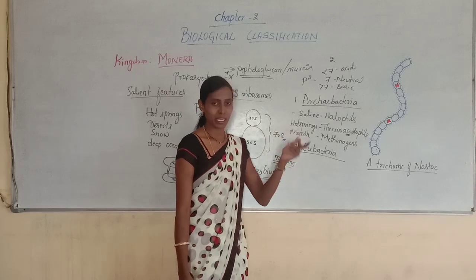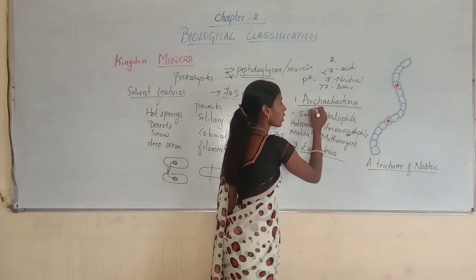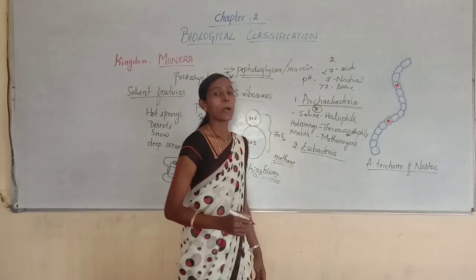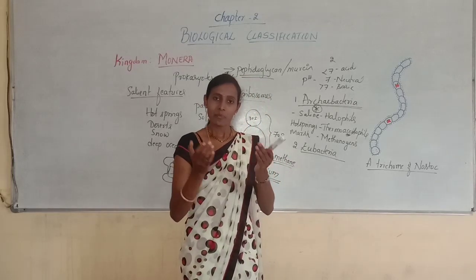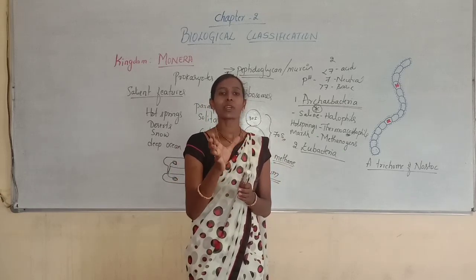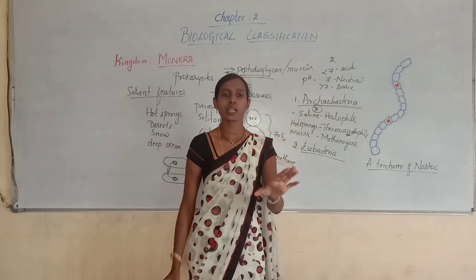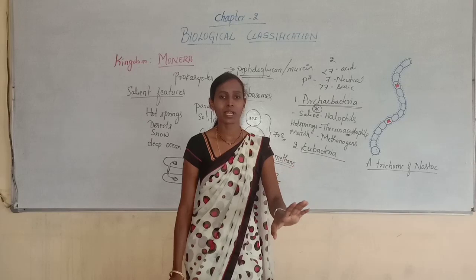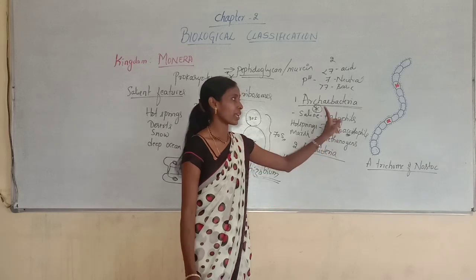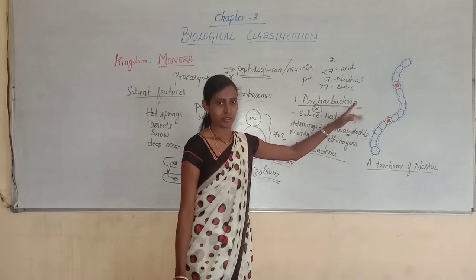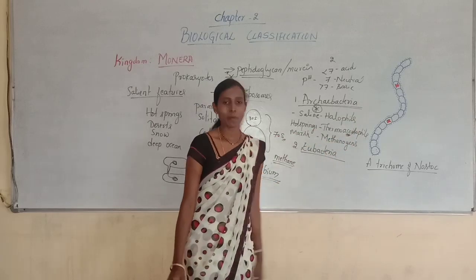A very important characteristic of Archaebacteria is that they do not contain peptidoglycans or murein in their cell wall. They do have a cell wall, but peptidoglycans are completely absent. This is the major difference between Archaebacteria and Eubacteria.